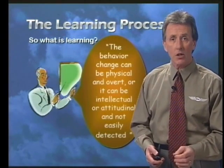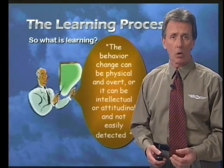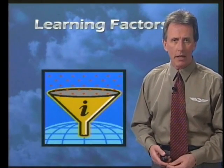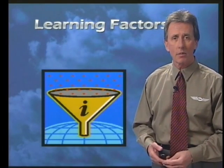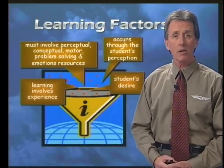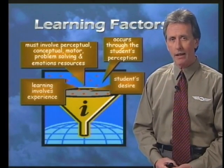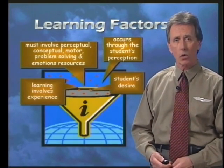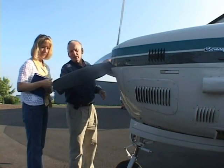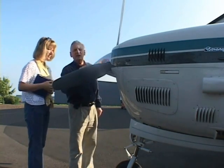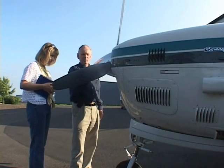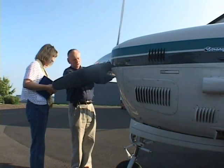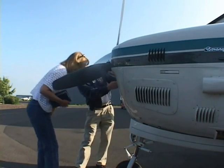The behavior change can be physical and overt, or it can be intellectual or attitudinal and not easily detected. There's no substitute for experience — it is a fact that all learning involves experience. To be effective, you as the instructor must provide experiences which your students can identify as steps toward attaining their personal goals. Your student must involve his or her verbal, perceptual, conceptual, motor, problem-solving, and emotional resources. Learning is complex — for example, while studying to learn one element, something else may be learned. This additional learning is called incidental learning.